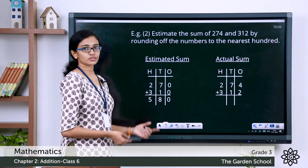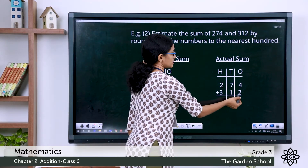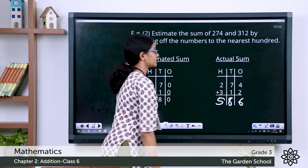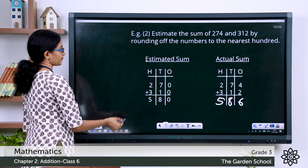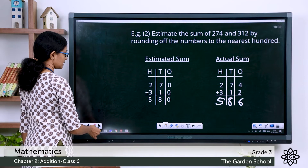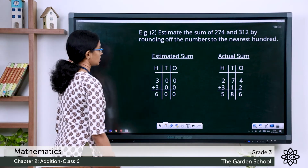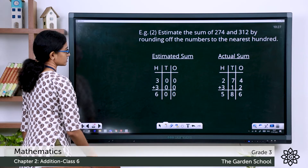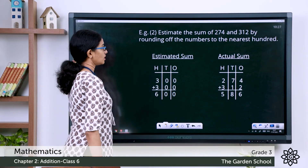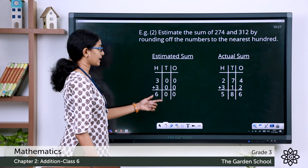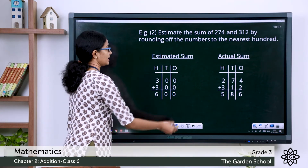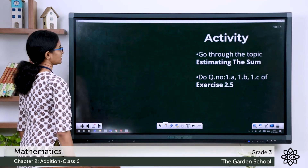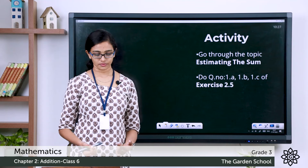Now let's check the actual sum: 4 plus 2 is 6, 1 plus 8 is 9 — wait, it's 8 — and then 5. So the actual sum is 586. The estimated sum is 600 and the actual sum is 586. In this case, the estimated sum is greater than the actual sum.